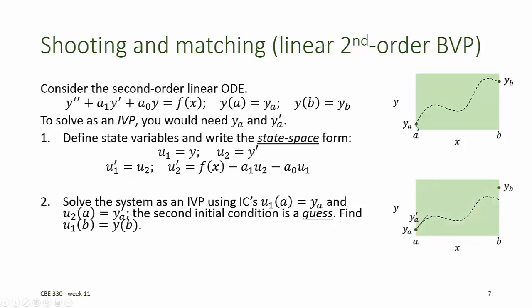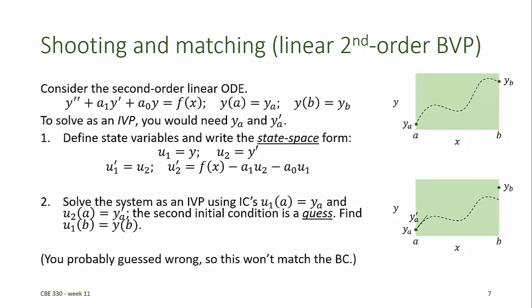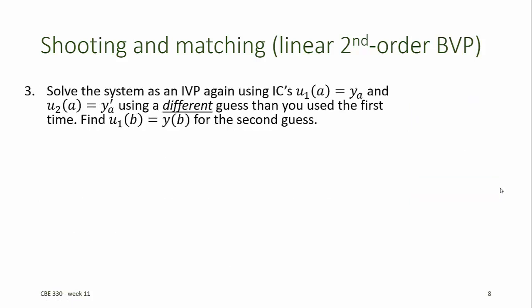We know y at a and y at b, but we solve the problem using the known value of y at a and a guess for y'(a). We've probably guessed wrong, so the solution is unlikely to exactly match the known condition y at b. So then we solve the system as an initial value problem again using a different guess for y'(a) than we used the first time.